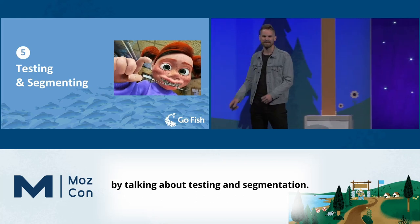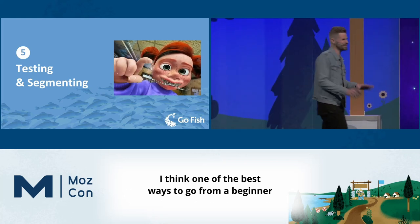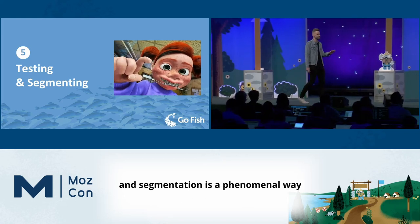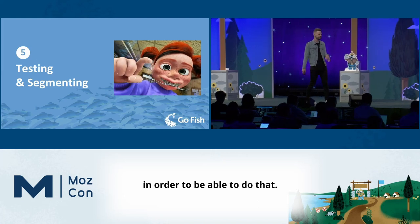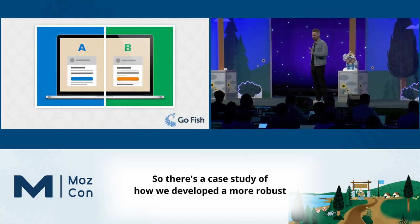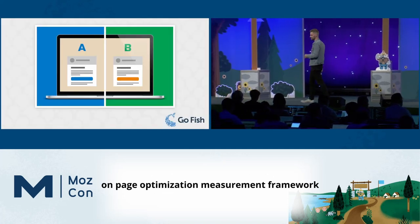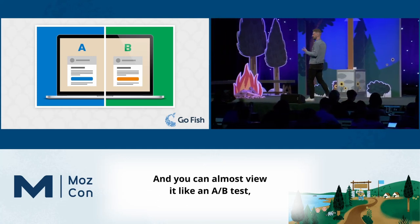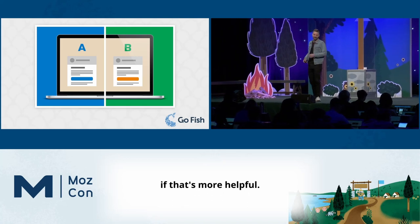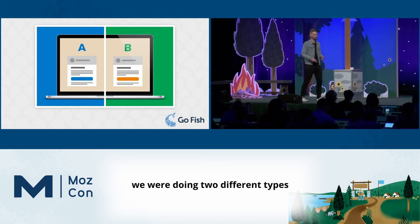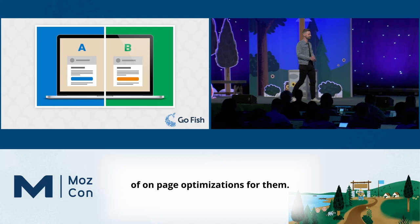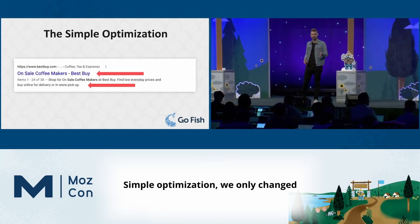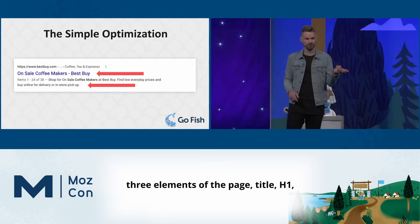Now let's round things out by talking about testing and segmentation. One of the best ways to go from a beginner to an intermediate SEO is to get more comfortable with experimentation. Here's a case study of how we developed a more robust on-page optimization measurement framework for a large e-commerce retailer — almost like an A/B test. We were doing two types of on-page optimizations: a simple optimization, where we only change the title, H1, and meta description, and an outline optimization.